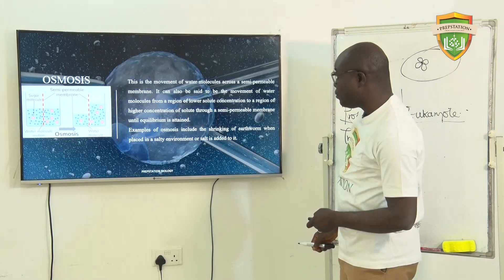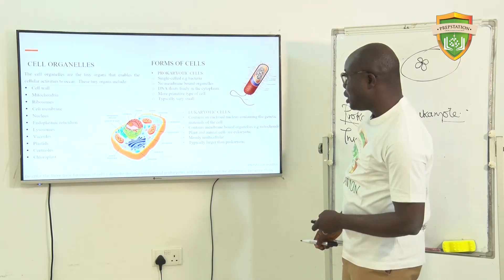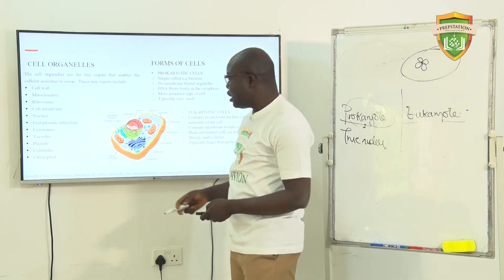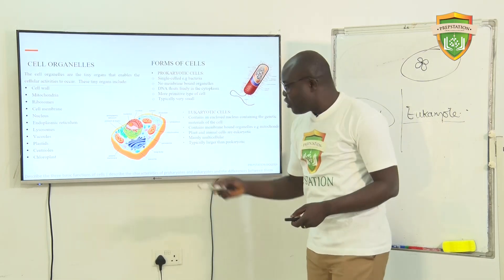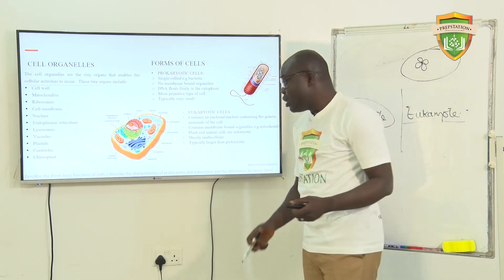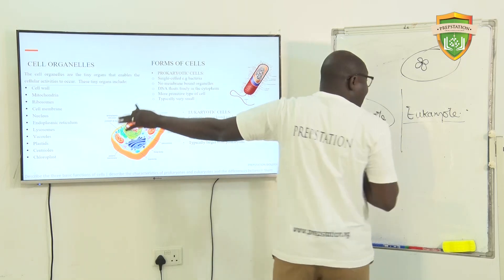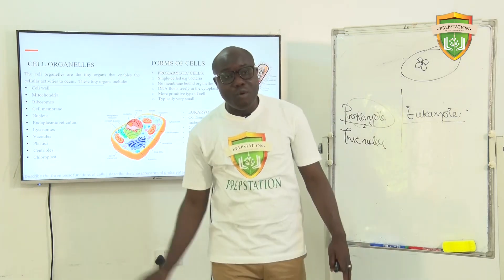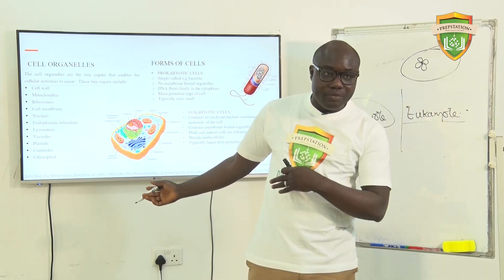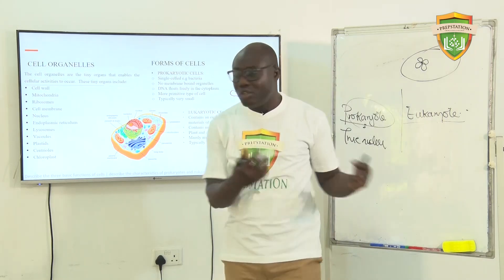Going back to the organelles: the next ones include endoplasmic reticulum, lysosome, plastids, centrioles, and chloroplasts. The organelles found in a cell are definitely more than what we've listed here — there are many more. But by now, if you are preparing for JAMB, cell organelles should not be a new topic to you.